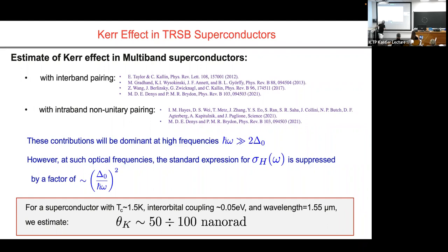The motivation for the polar Kerr effect is that — as I've said multiple times — this is the unambiguous optical test for a time reversal symmetry breaking state. People like Andrei and Chandra ask: is it or isn't it? Then I go to the lab. The measurement we need is this one: the polar Kerr effect, which is very small — 50 to 100 nanoradians — roughly a million times smaller than what people usually measure in magnetic materials.